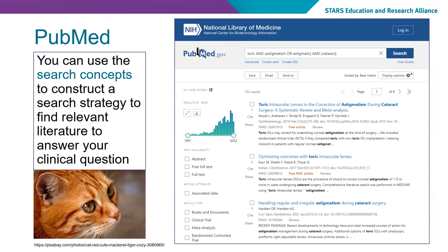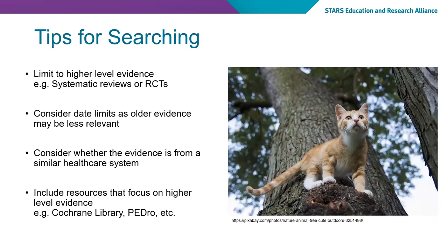Putting all this together, if we use a database like PubMed, you can see how our terms will lead us into a search. Searching should always be based on the question and the PICO topics. When you are searching, consider limiting to a higher level of evidence — most databases will allow you to check a box to limit to systematic reviews or randomised controlled trials, or whatever study type is appropriate. Consider date limits, as older evidence may be less relevant. Also consider whether the evidence is from a similar healthcare system — for example, evidence from the United States may be quite different to Australia and may not be as relevant.